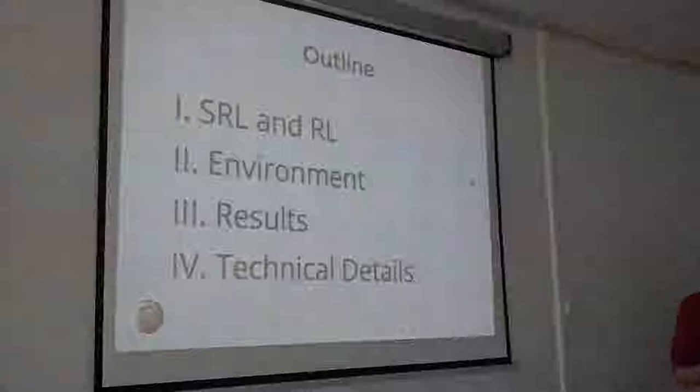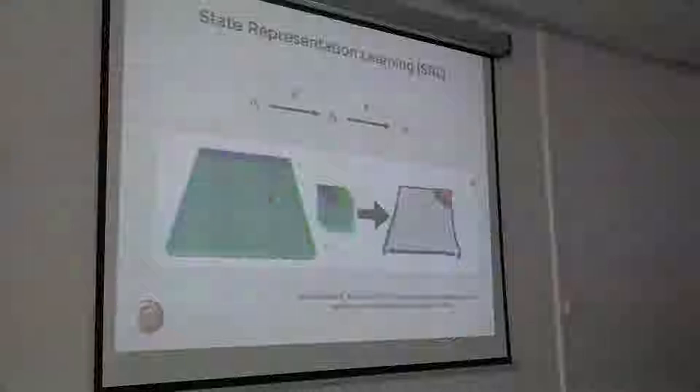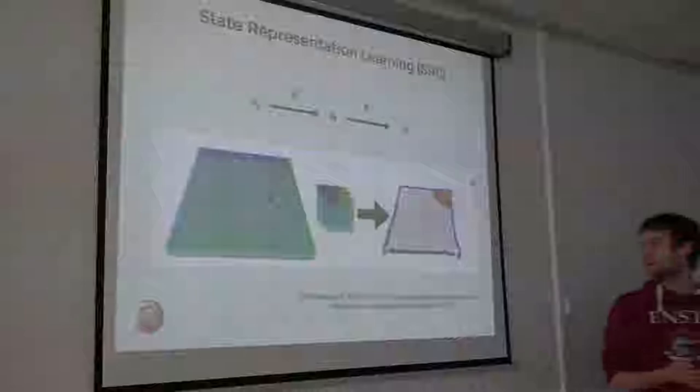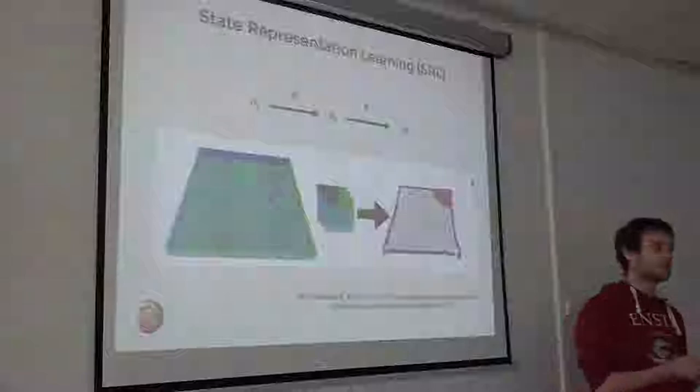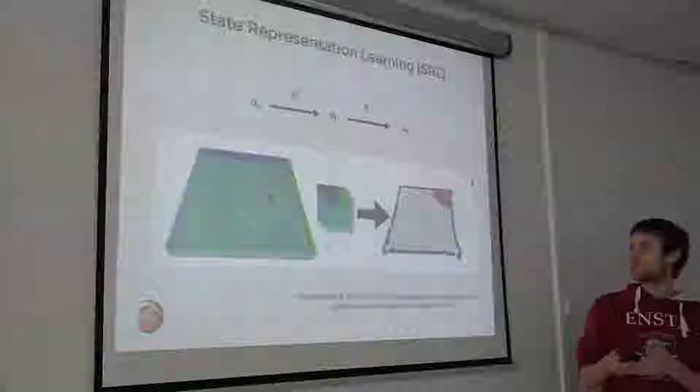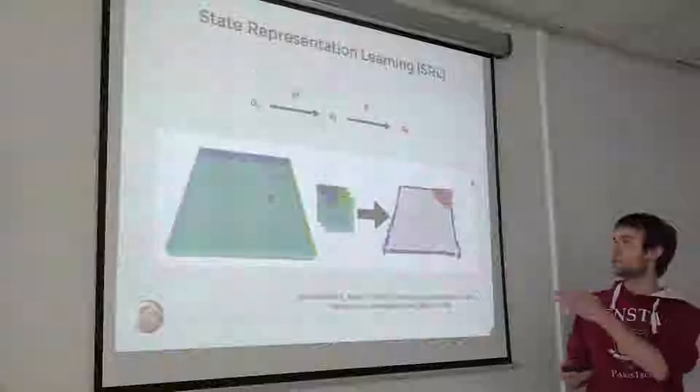As Natalia mentioned yesterday, in classic reinforcement learning you have observations and you try to learn a policy from them. You try to learn directly from raw pixels. In state representation learning, you try to learn an intermediate representation that keeps only the useful information to solve the task — a low-dimensional space on which you will then learn a policy.